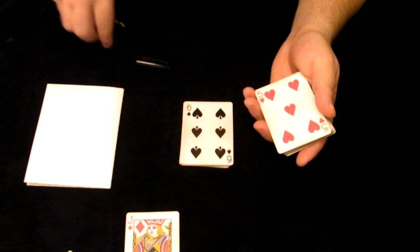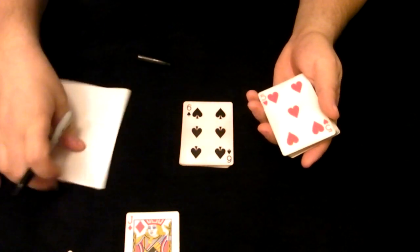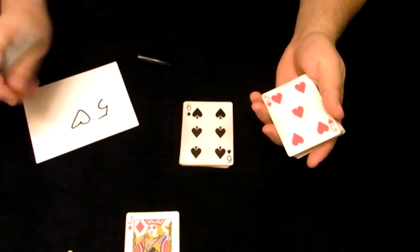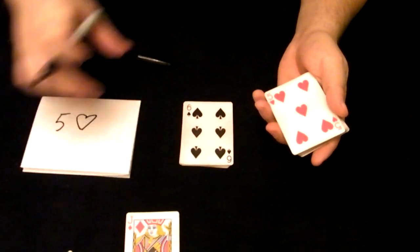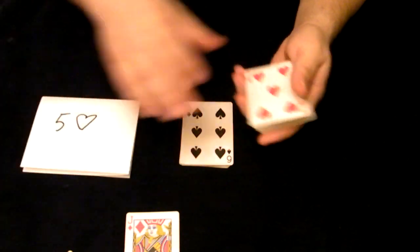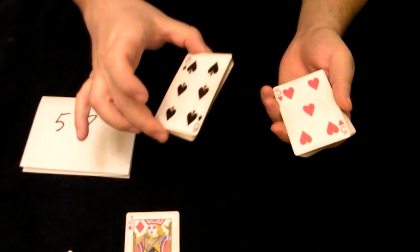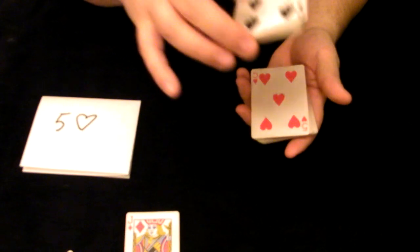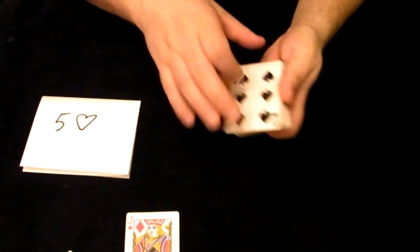So we're going to write our magic card down. In my case, it's the five of hearts. So I'll write that down. Five of hearts. I'll turn that so you can see it. And then what we're going to do is we're going to simply place our random amount of cards from our lucky card and we're just going to bury our magic card just like so.